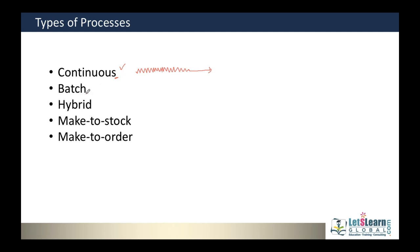Other process types include batch, where production goes in batches; hybrid, which is a combination of continuous and batch processes; make-to-stock, where goods are made to be stocked; and make-to-order, where goods are produced based on orders received. These are the different types of processes in a manufacturing industry.